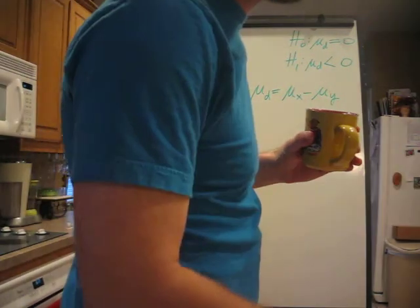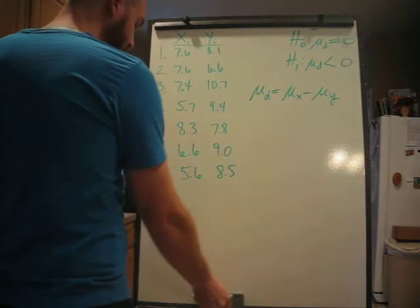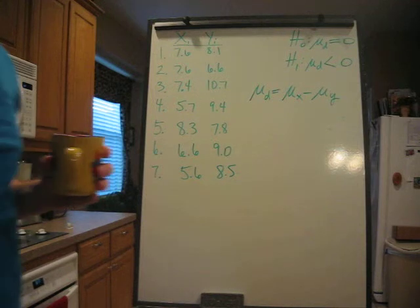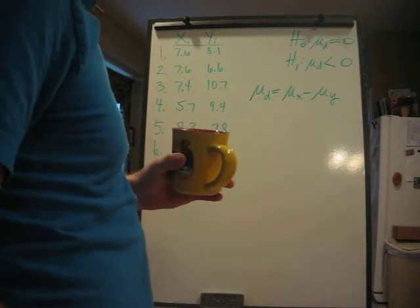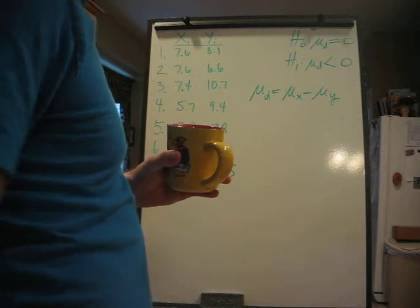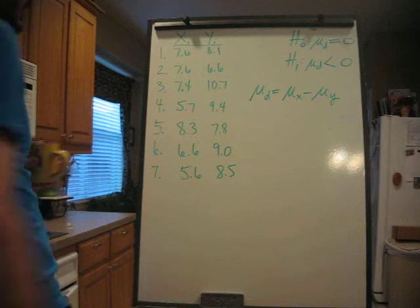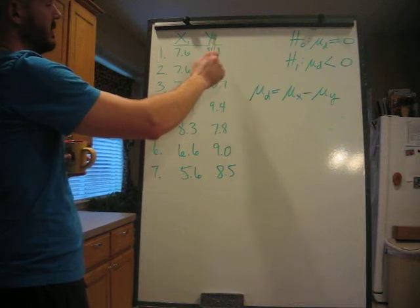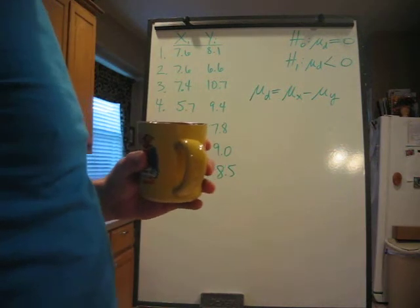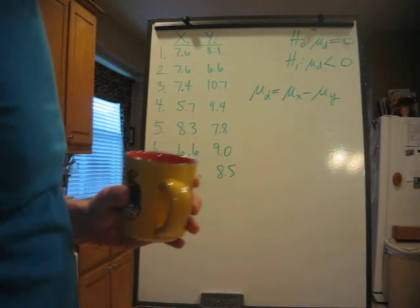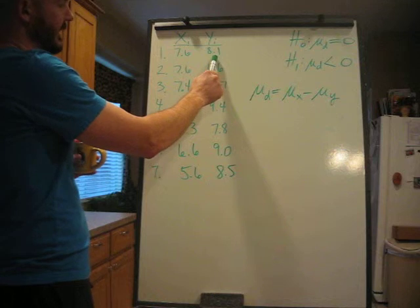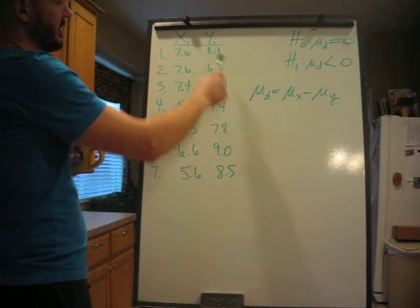I'm going to do inference about two means with dependent samples. I've already written the data on the whiteboard here, so you're going to want to put these in your list. If you go to Stat, enter, put x sub i in List 1 and y sub i in List 2. Since we're doing inference about two means with dependent samples — that's very important, dependent samples — that means this number is in relation to this number. If you don't line them up properly in your list, you're not going to get accurate calculations.